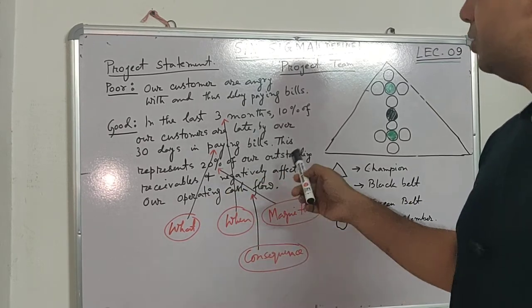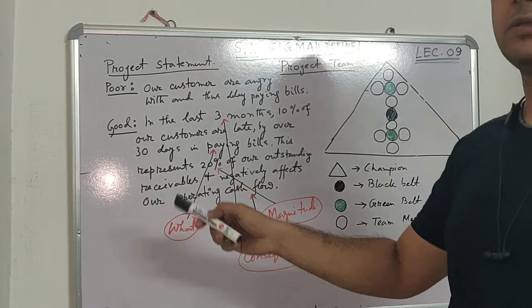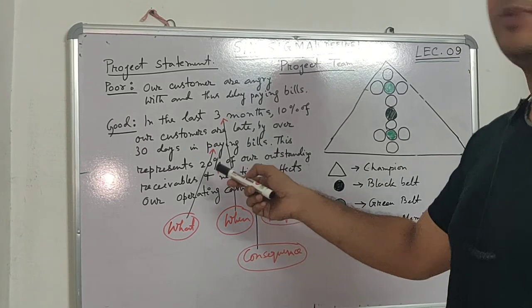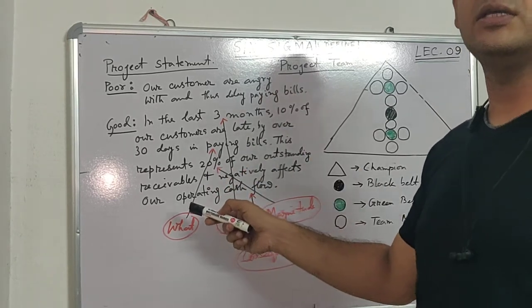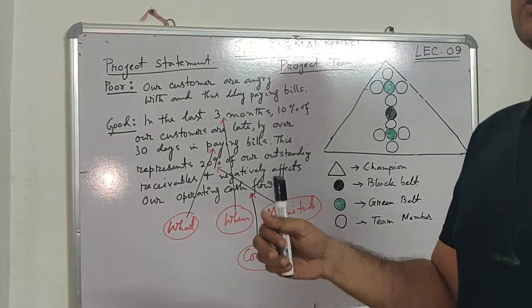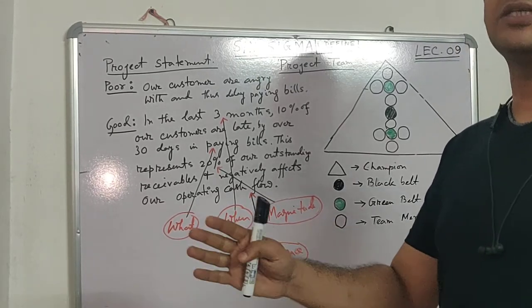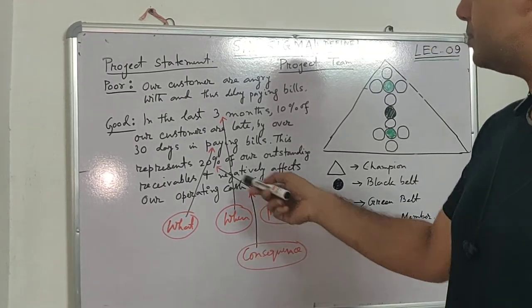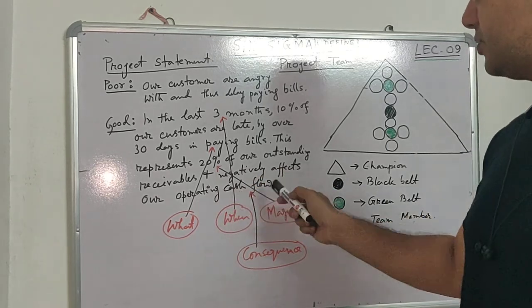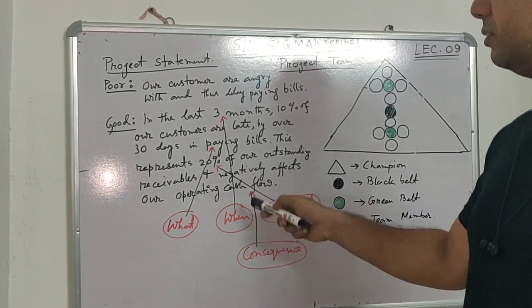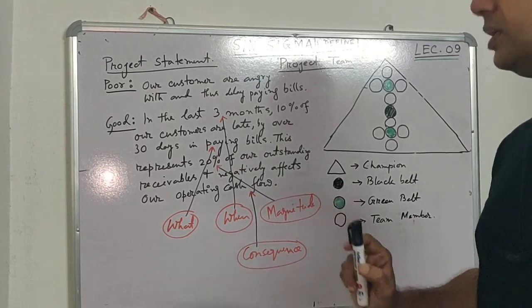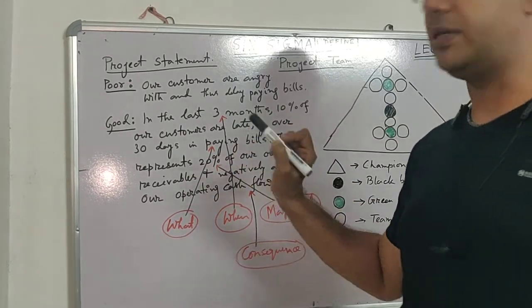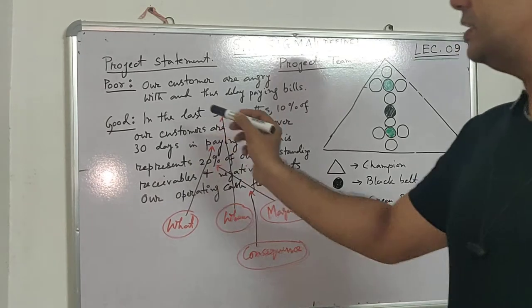The magnitude is 20% of outstanding receivables, which is huge, making this a serious problem and a strong candidate for a Six Sigma project. If anything affects beyond 10% of our business it is very much ready for a Six Sigma project. The consequence — not receiving money affecting operating cash flow — is also clearly stated. When, what, magnitude, and consequences must all be mentioned in the statement.